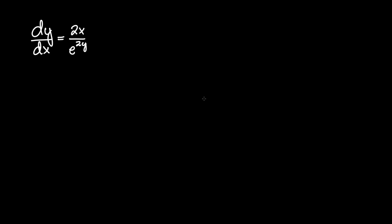So let's multiply both sides by e to the 2y and also multiply by dx. That will give us e to the 2y dy equals 2x dx.